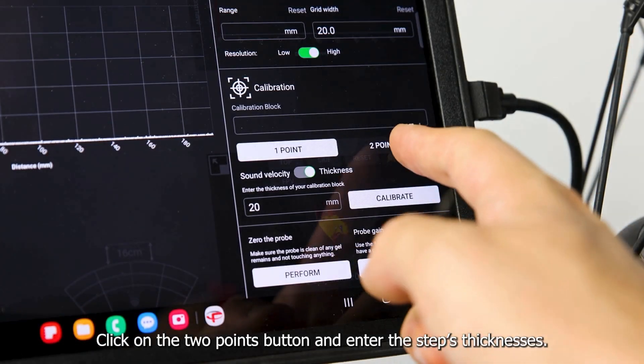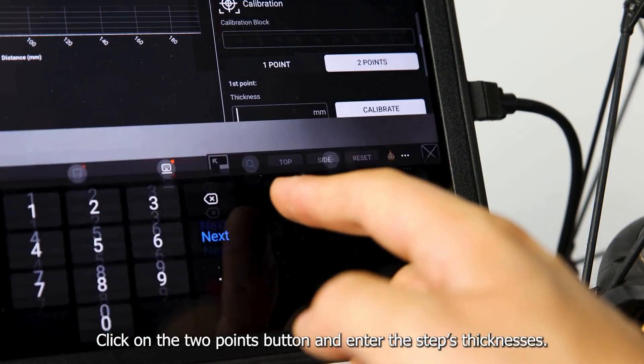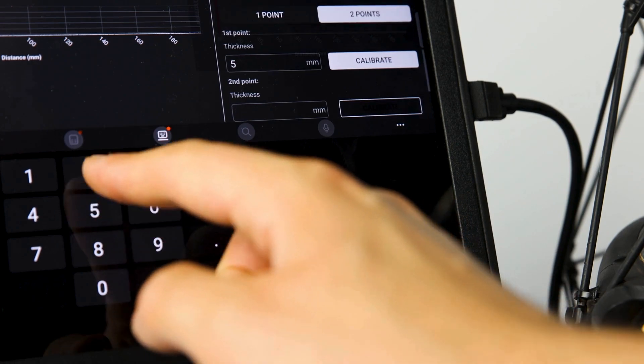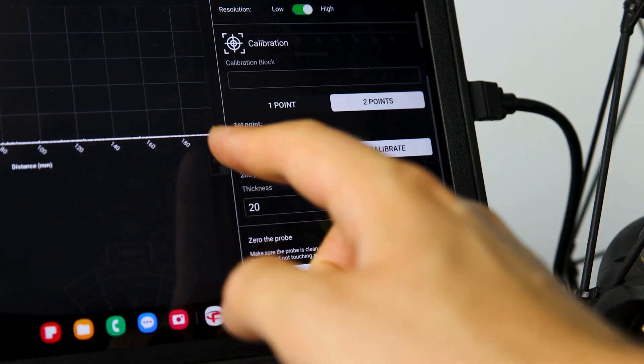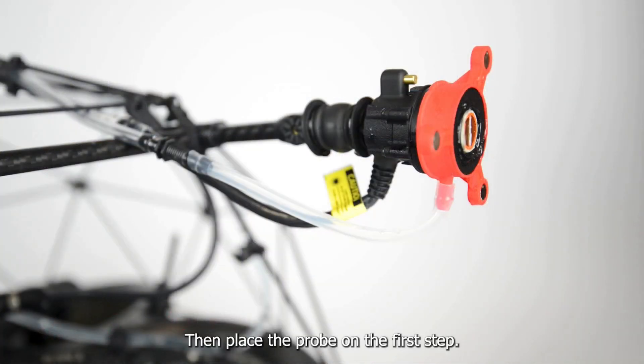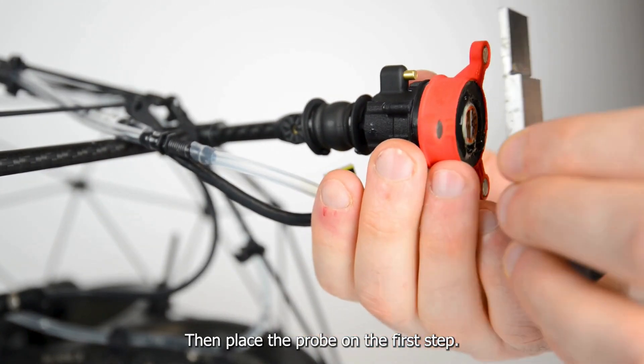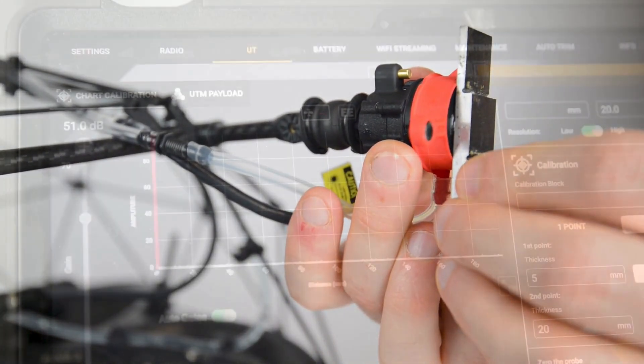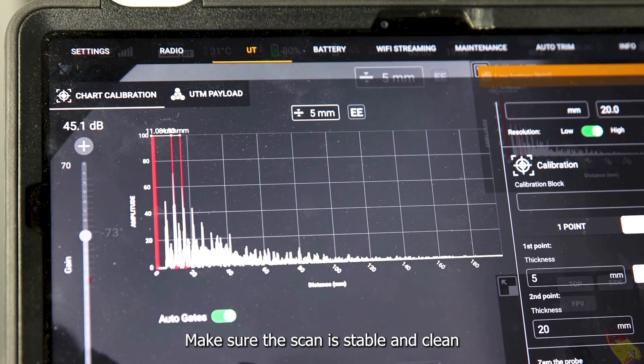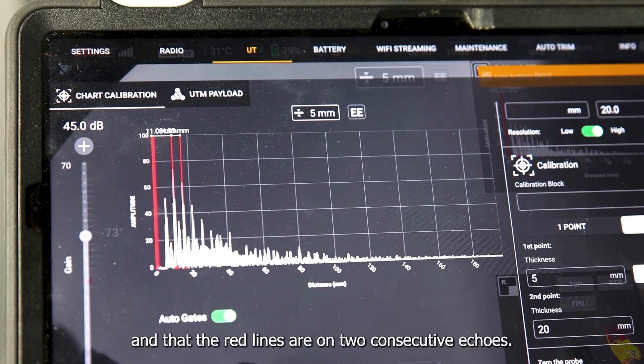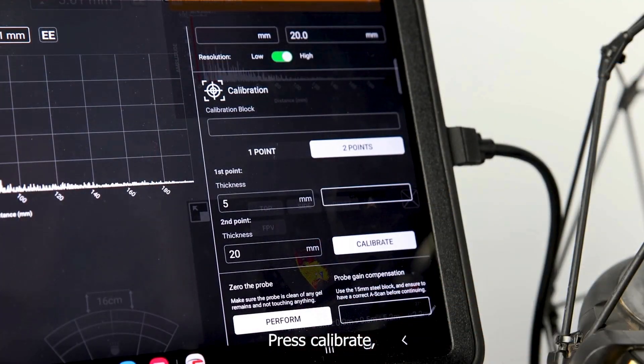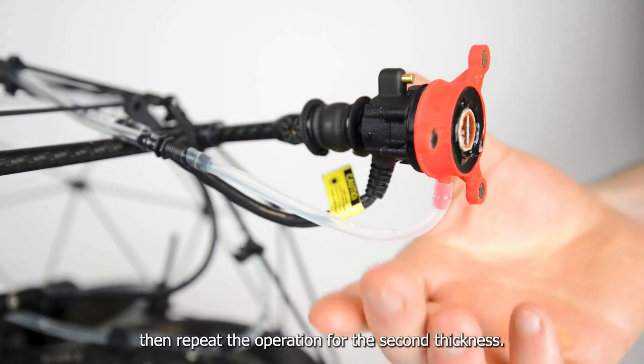Click on the 2 points button and enter the step's thicknesses. Then place the probe on the first step. Make sure the A-scan is stable and clean and that the red lines are on two consecutive echoes. Press calibrate. Then repeat the operation for the second thickness.